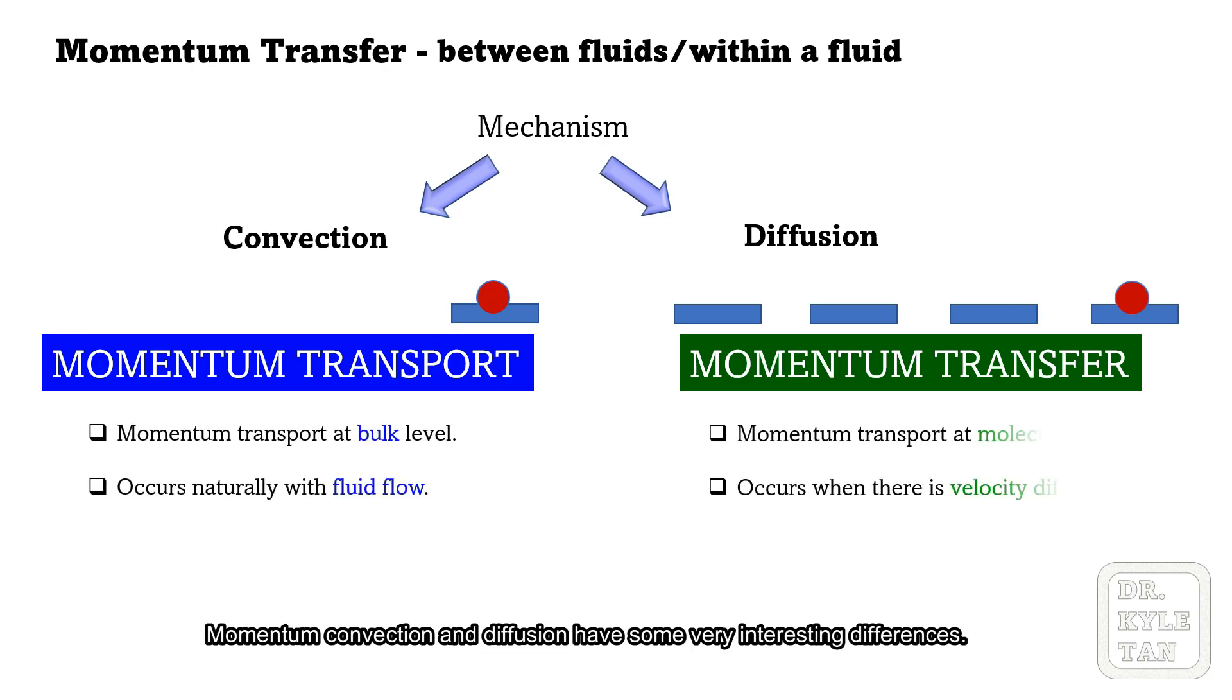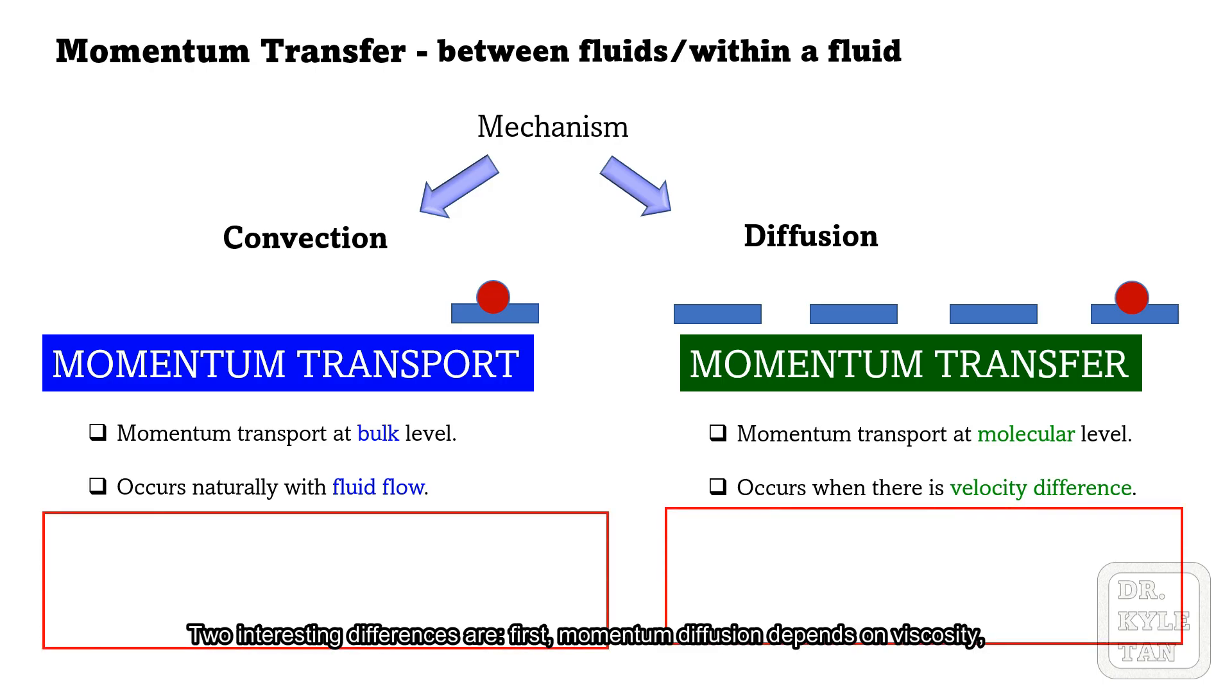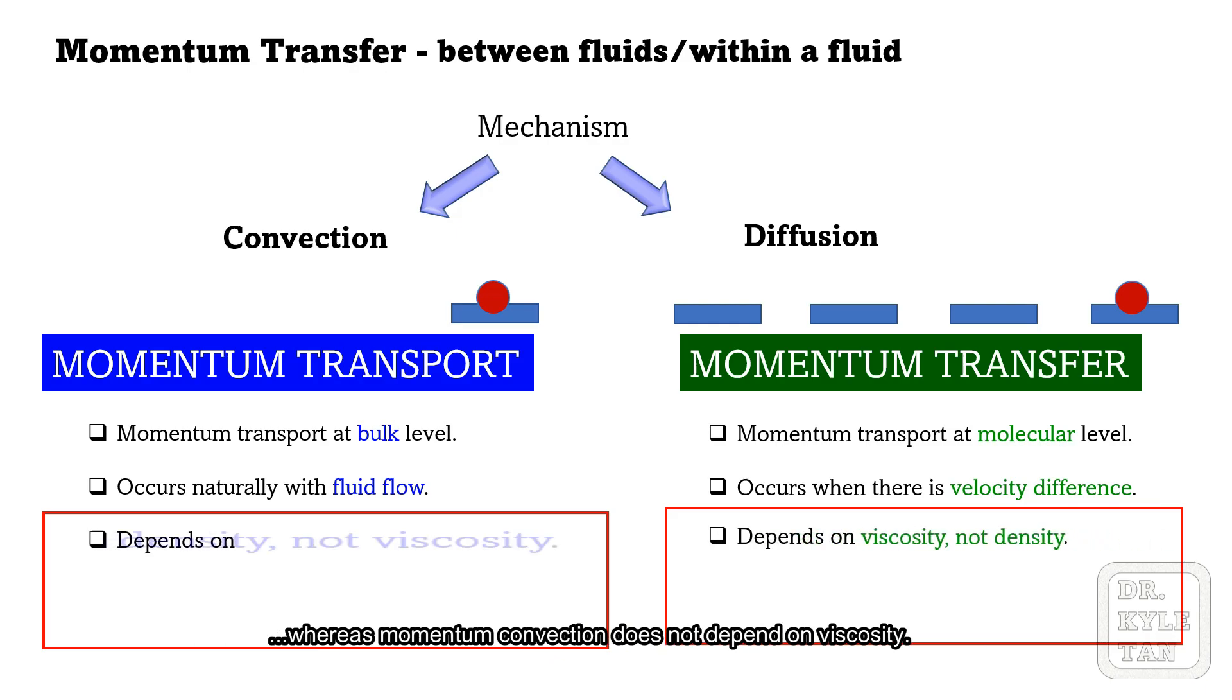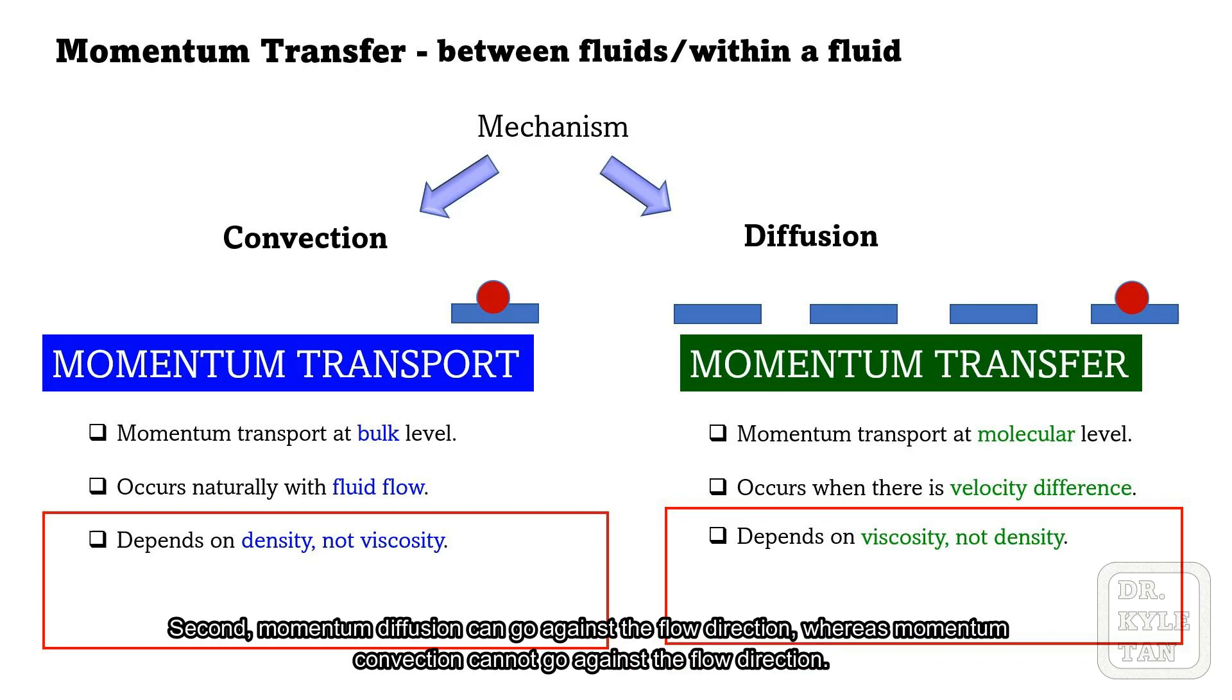Momentum convection and diffusion have some very interesting differences. Two interesting differences are: First, momentum diffusion depends on viscosity, whereas momentum convection does not depend on viscosity. Second, momentum diffusion can go against the flow direction, whereas momentum convection cannot go against the flow direction.